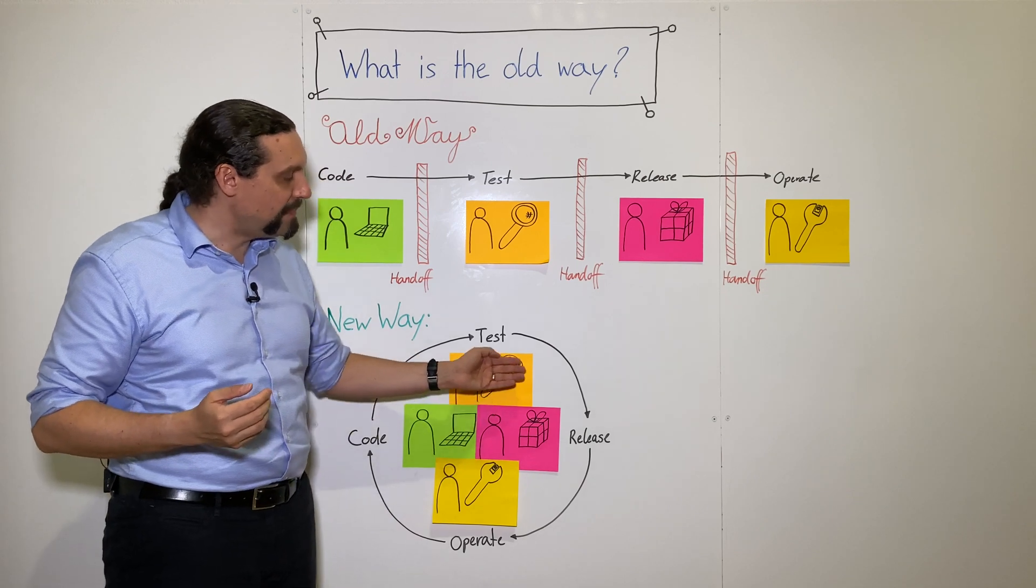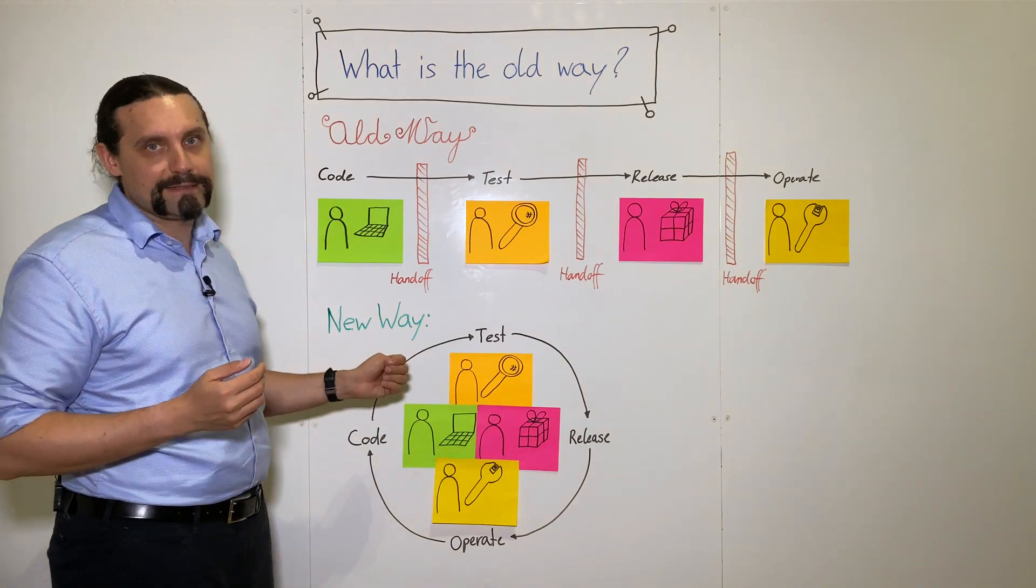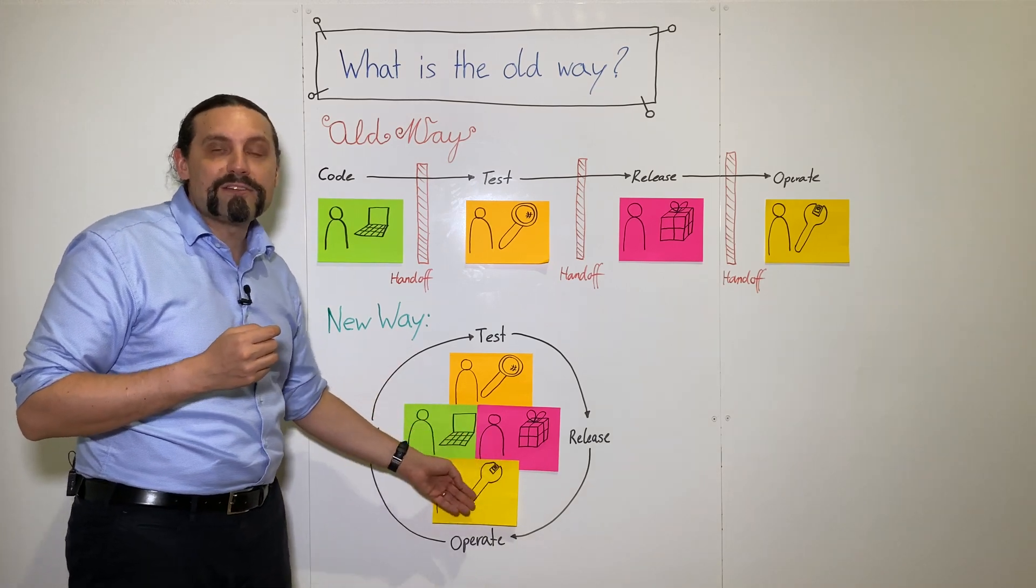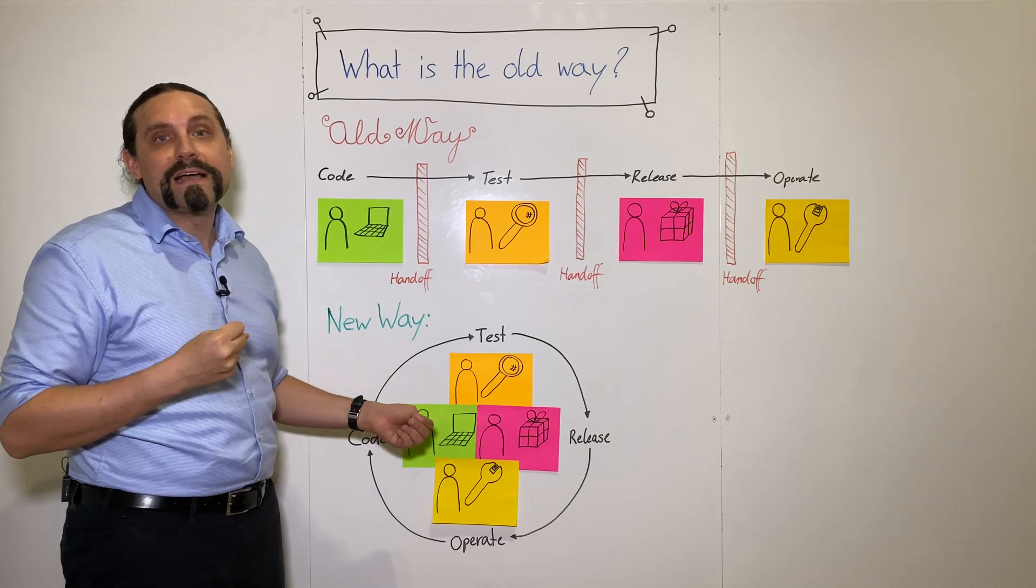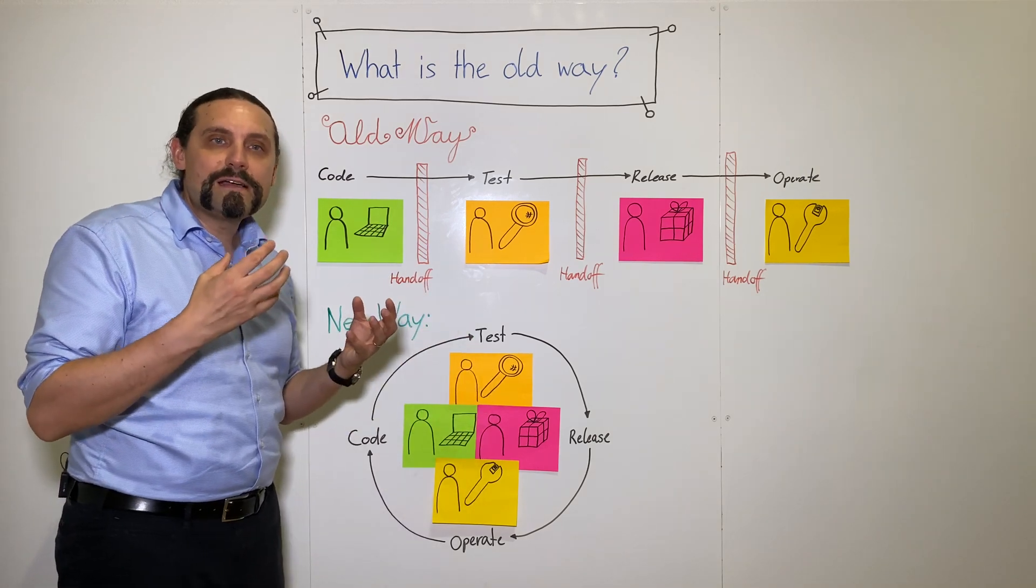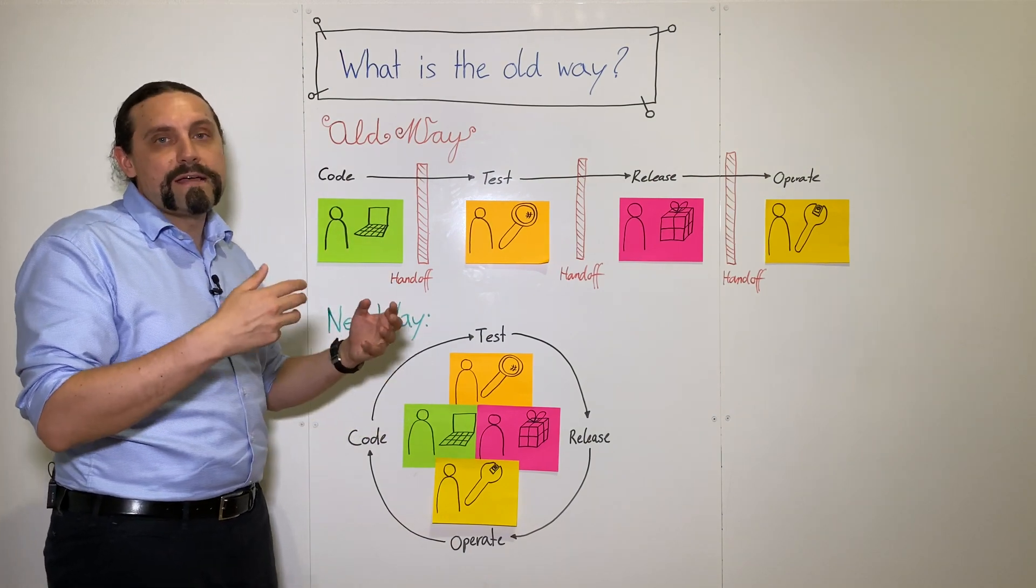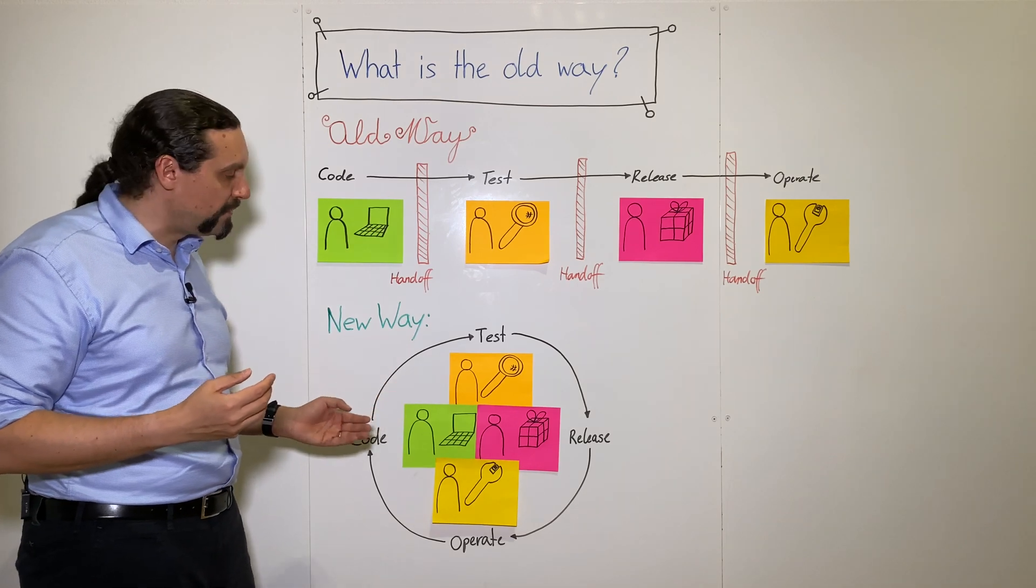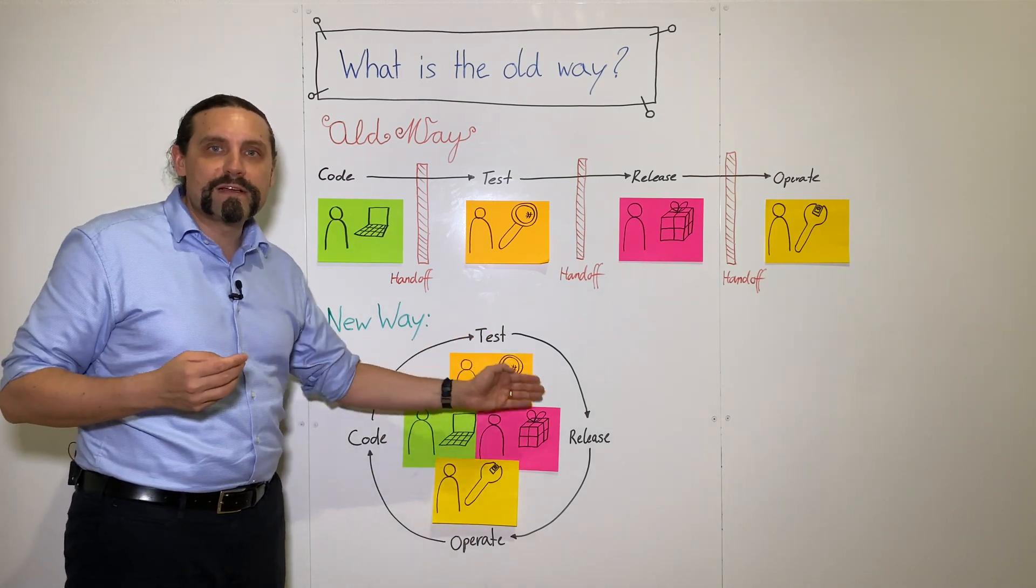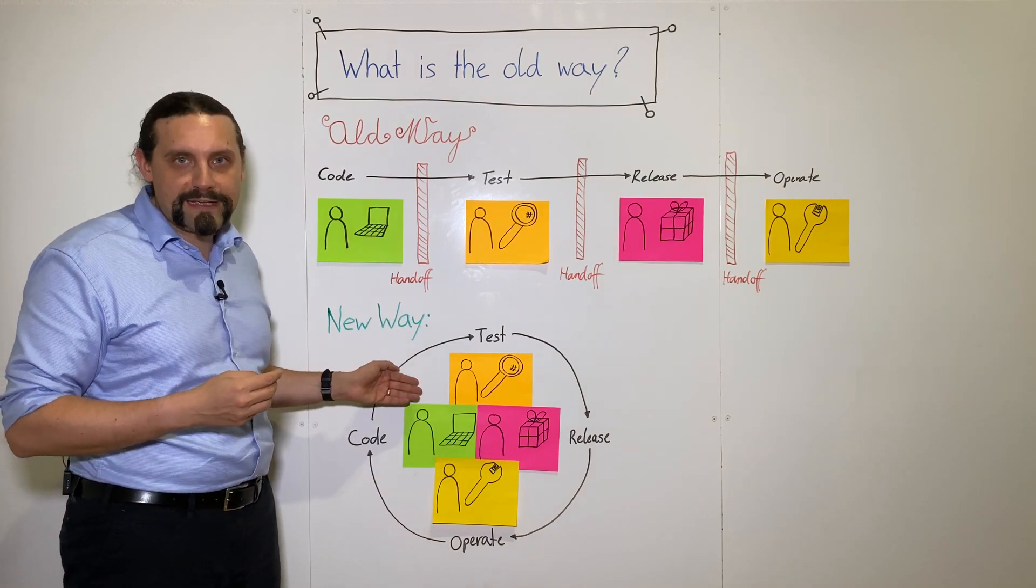They are doing that by automating things like continuous integration, continuous deployment, and testing. They gather feedback from production by automating telemetry and getting feedback from customers. They establish a continuous learning culture so they can learn from their failures and learn new ways of working. As you can see, this is a very good place to work and where you can grow. This is the new way of working—the DevOps way.